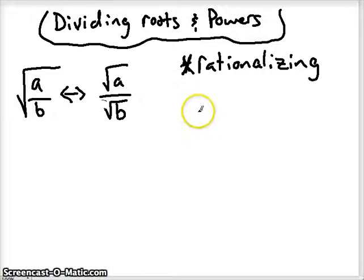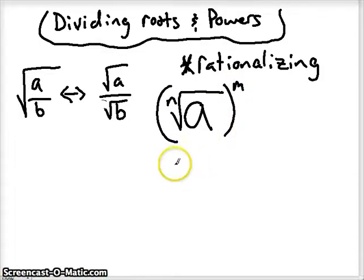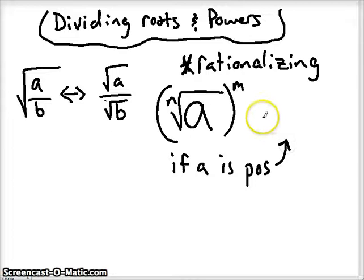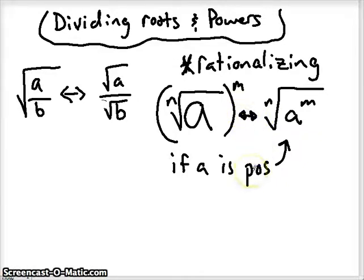Another thing we want to keep in mind is if we have the nth root of a number to a power, as long as a is a positive number, I'm allowed to rewrite that in a slightly different form — I'm allowed to bring that exponent into the radical and take the nth root of it. Sometimes that may help us simplify. Other times we may need to go to this form. It's always whatever helps us simplify the easiest.